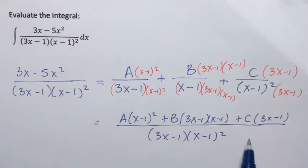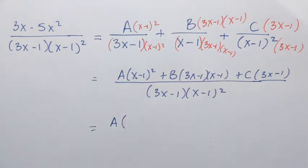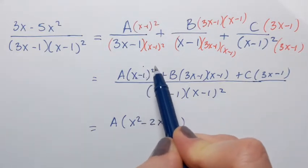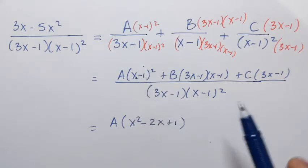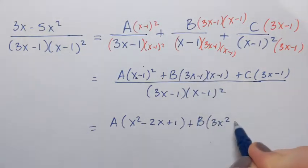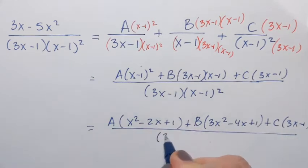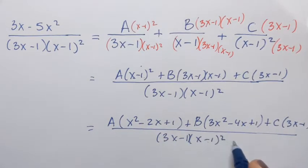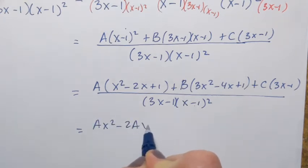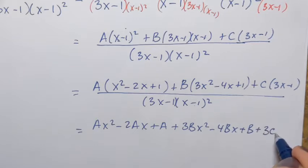The next step is to simplify the numerator. A(x minus 1) squared gives x squared minus 2x plus 1. You can FOIL it or apply the square of a difference formula. Plus B times (3x squared minus 4x plus 1), plus C(3x minus 1). Then I distribute A, B, and C: ax squared minus 2ax plus a plus 3bx squared minus 4bx plus b plus 3cx minus c.